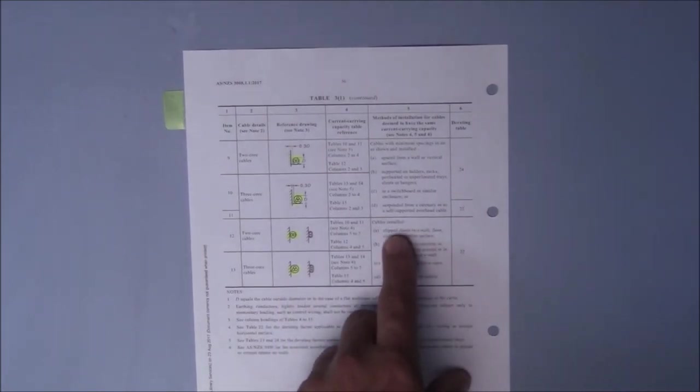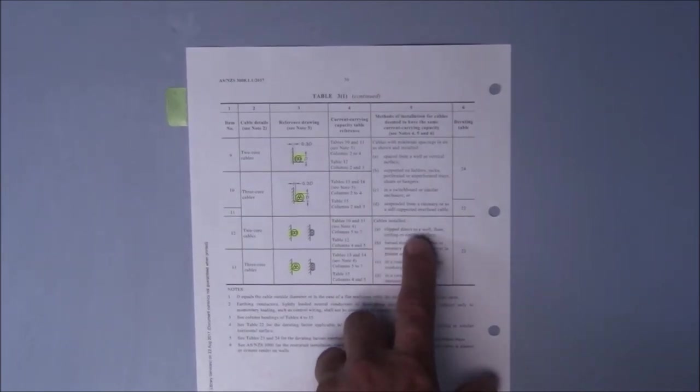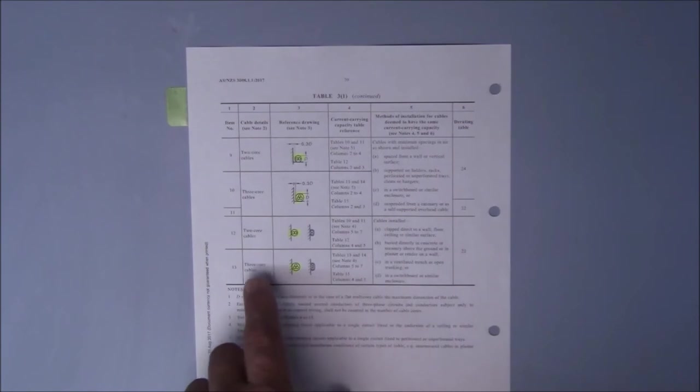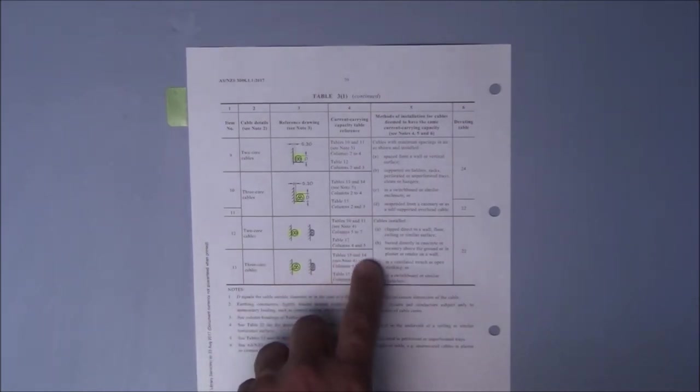And a further installation note over here will say that the cable is installed clipped directly to a wall, floor, ceiling, or similar surface. Therefore, we'll be looking at tables 13 and 14, columns 5 through to 7.